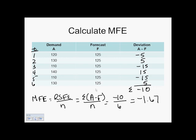If we do the math, we get negative 1.67. A positive MFE means under forecasting, because actual demand is higher than forecasted demand. A negative MFE means we're over forecasting — our actual demand is lower than the forecasted demand. So here we have a negative MFE, meaning we have over-forecasted; our actual demand is less than, on average, what we have been forecasting.